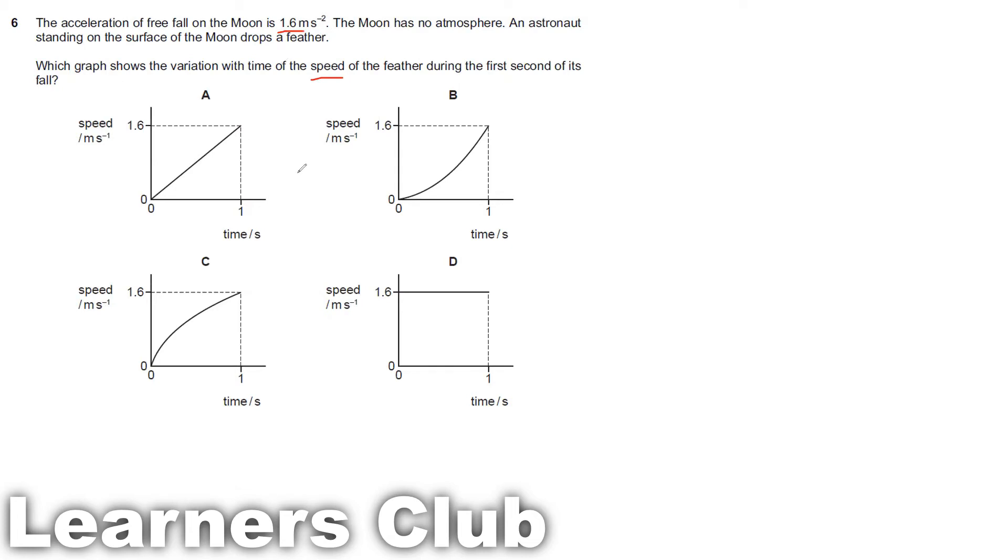So as you can see, throughout you're going to have an acceleration of 1.6 meter per second square as there is no atmosphere. When you take a speed time graph, the gradient of the speed time graph will give the acceleration which is a constant value. So it should be a straight line in which the gradient gives you a value of 1.6 meter per second square.